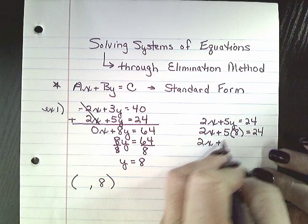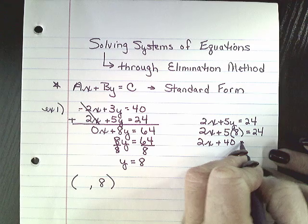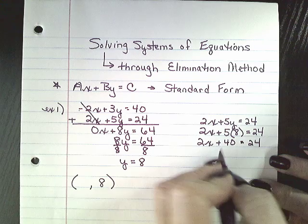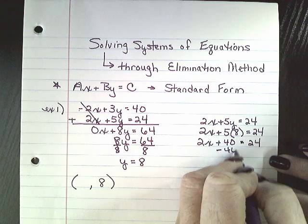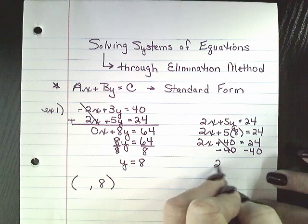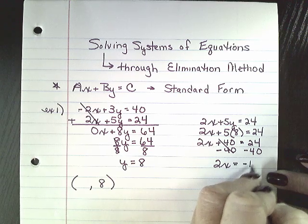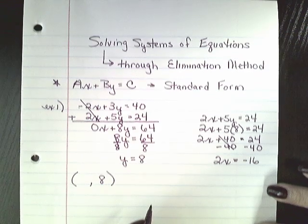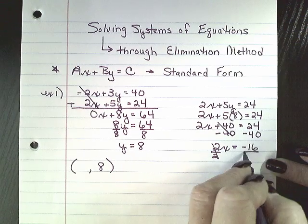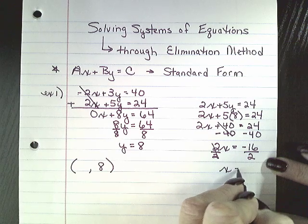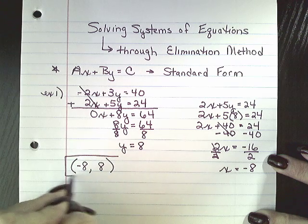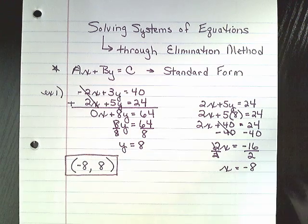2x plus 40 equals 24. Now remember this is a two-step equation at this point. Move your 40 by adding a negative 40 to both sides and you will have 2x equals negative 16. Solve, divide by 2, x is equal to negative 8. So my solution would be negative 8, 8.